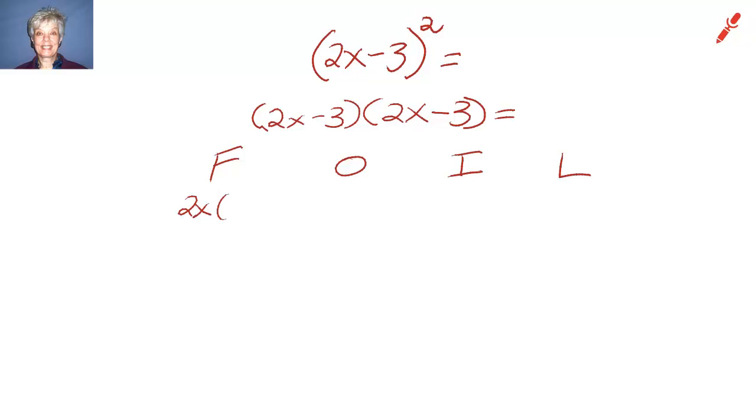2x times 2x, the first two terms, plus 2x times negative 3, the outside terms, plus negative 3 times 2x, the inside terms, plus negative 3 times negative 3, the last terms.